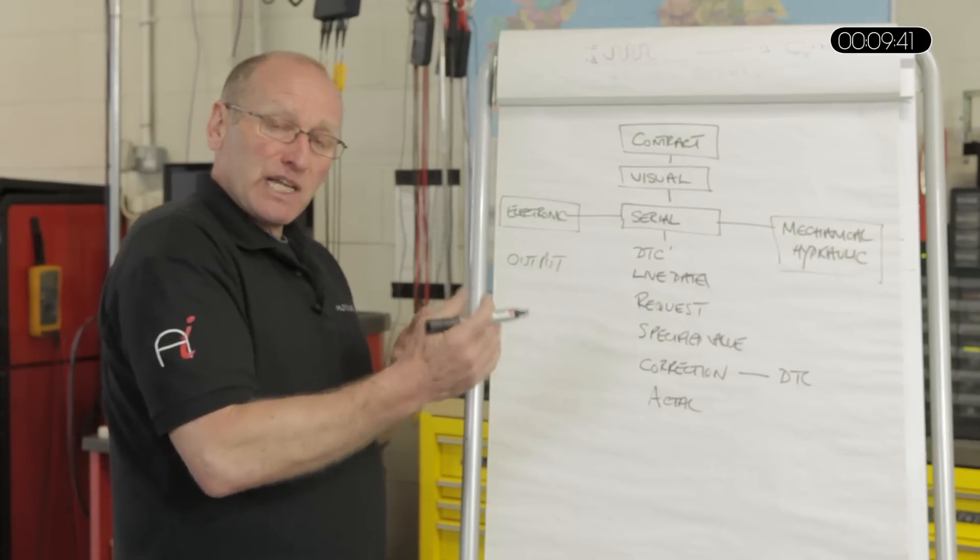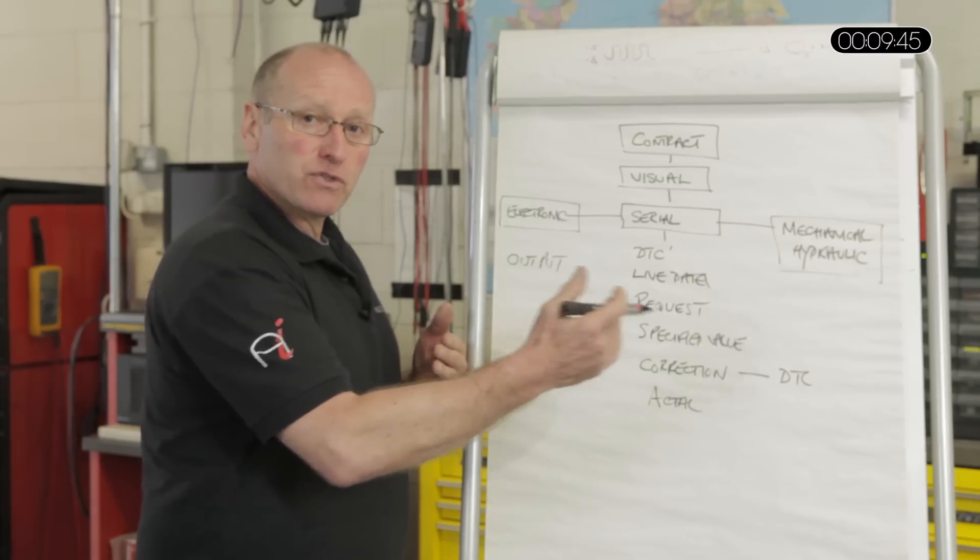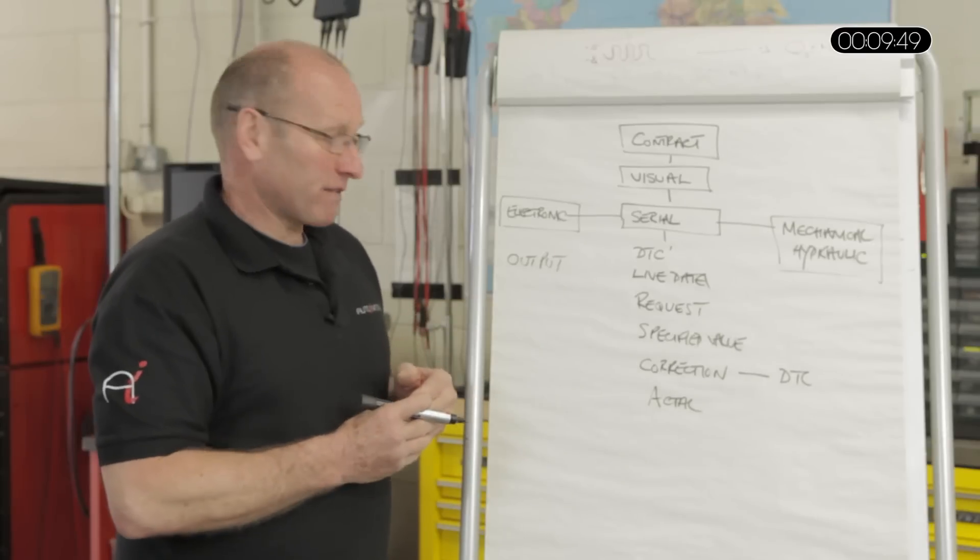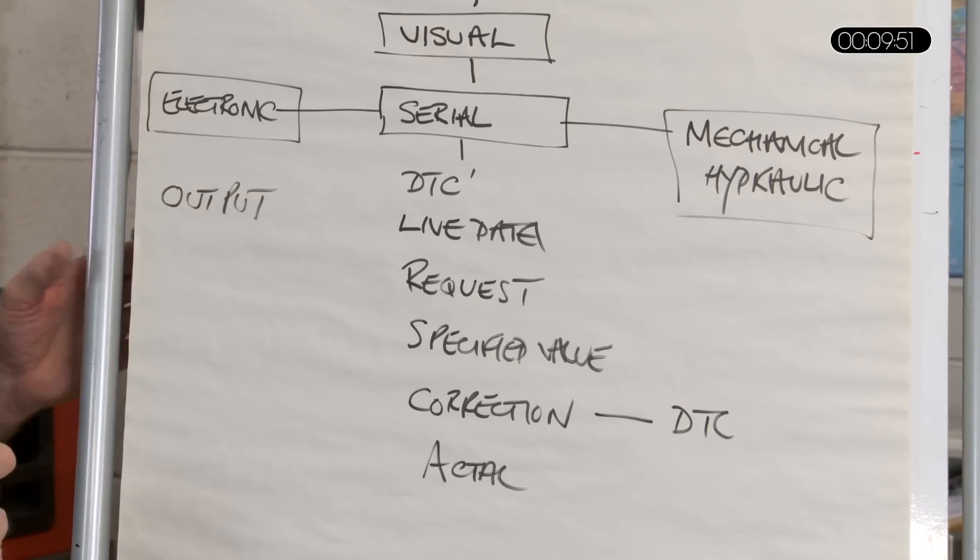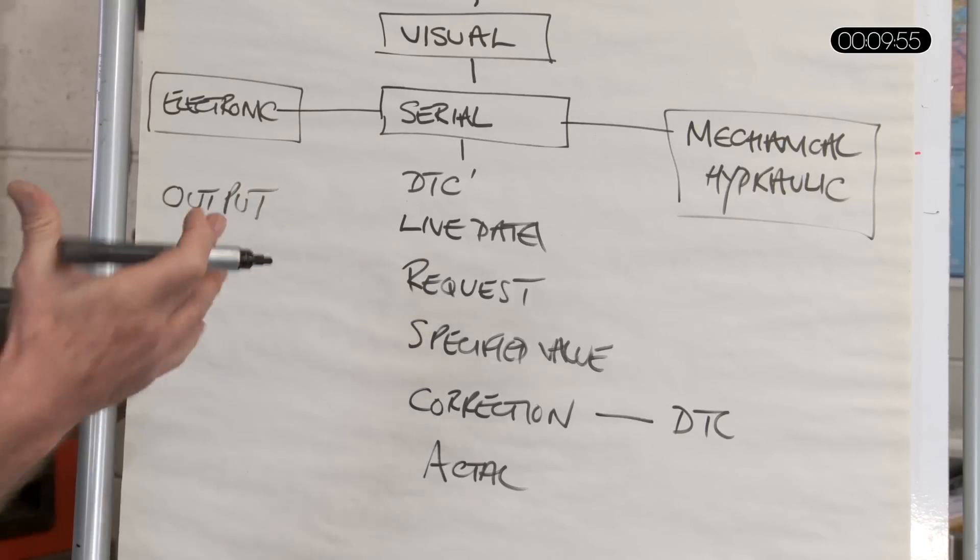So the process that we're developing here is a balance of different tools supporting data as we progress through the symptoms of the fault. So the first thing we check is output. The second thing we check electronically is the request or input.